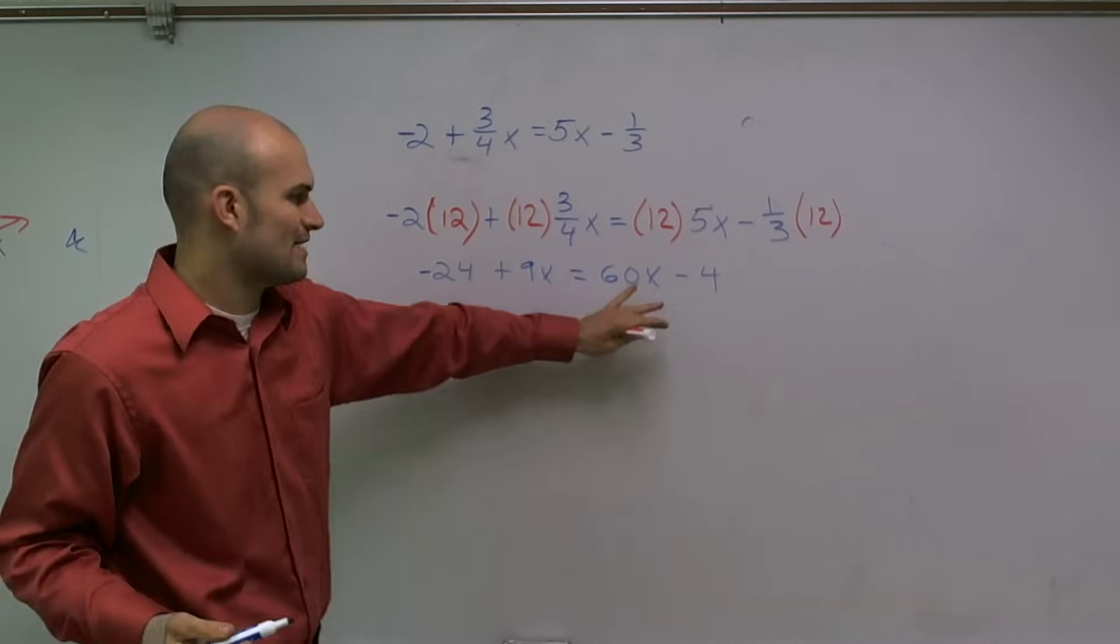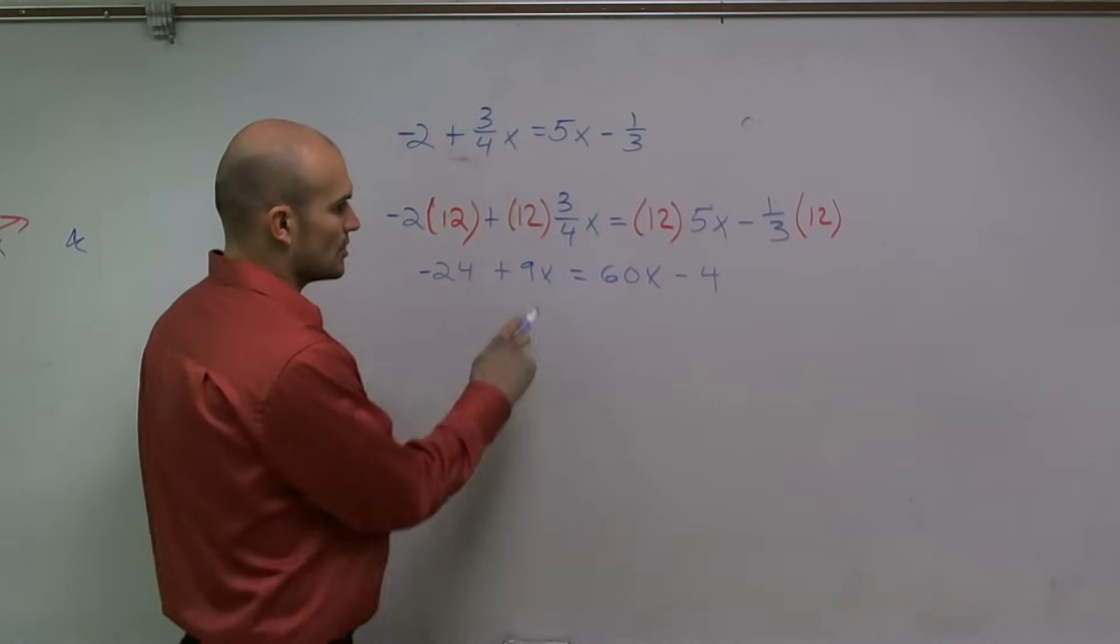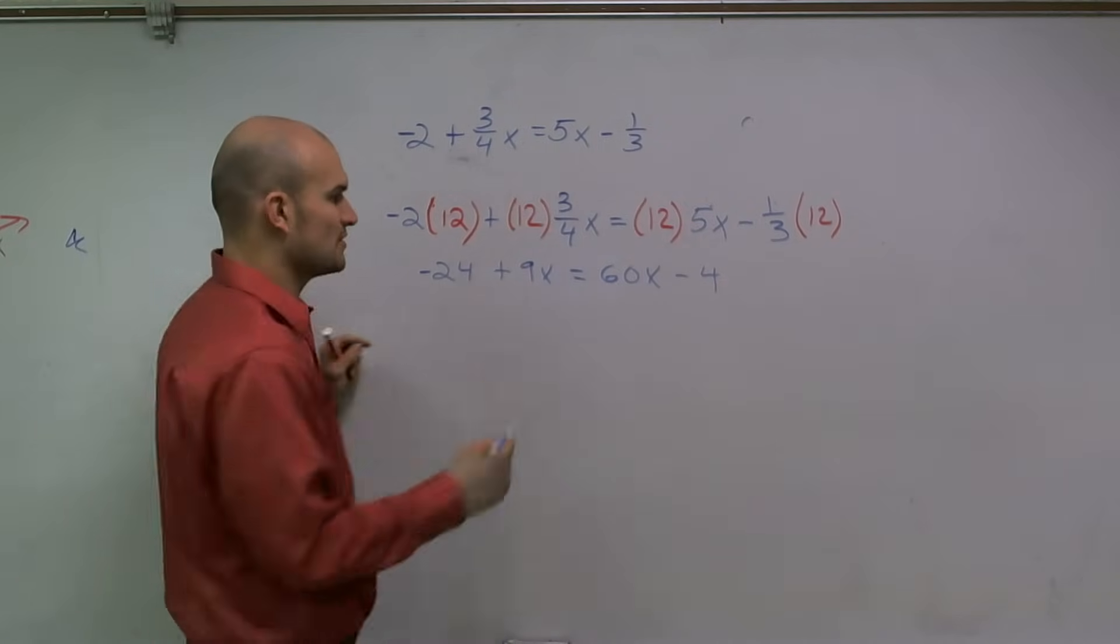So now I've cleared my fractions. Now what I need to do is get my variables on the same side. I have 9x here and 60x here. I usually like to get rid of the smaller x first.